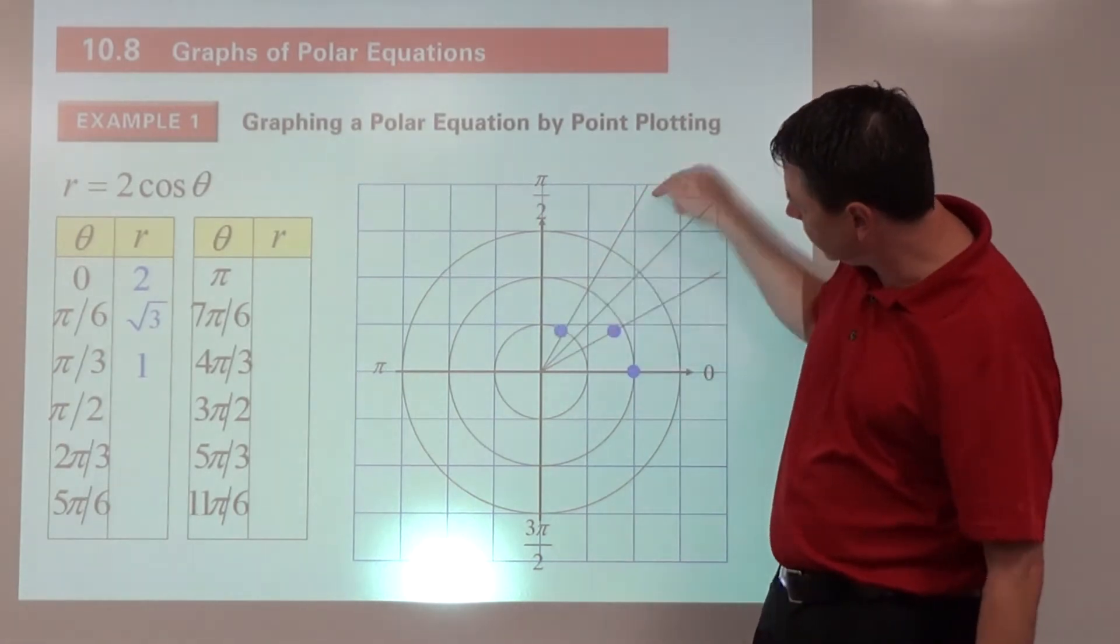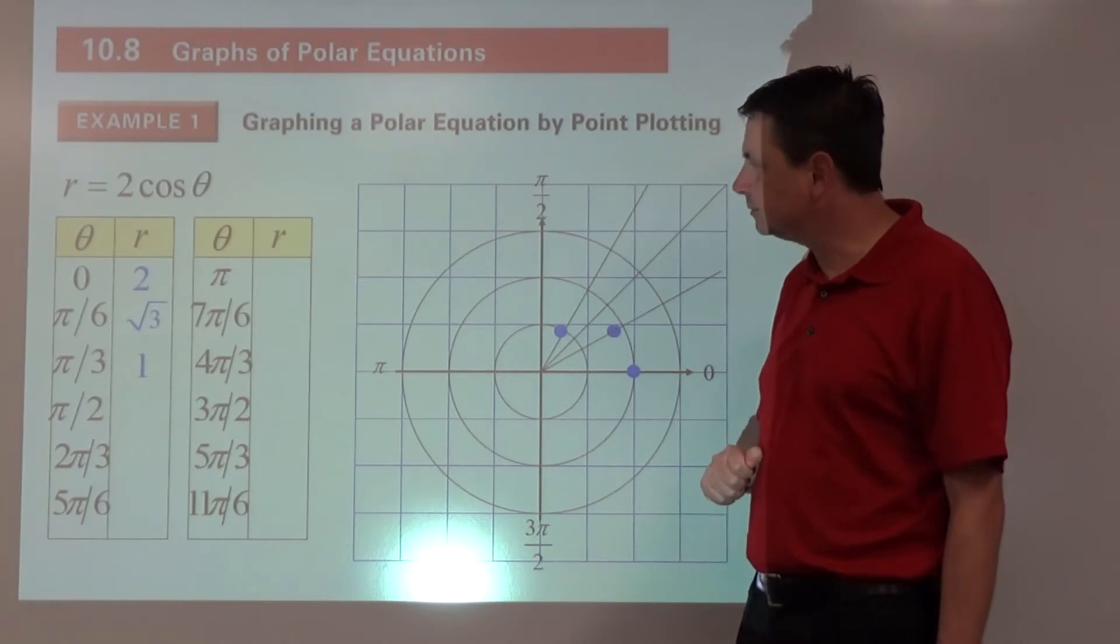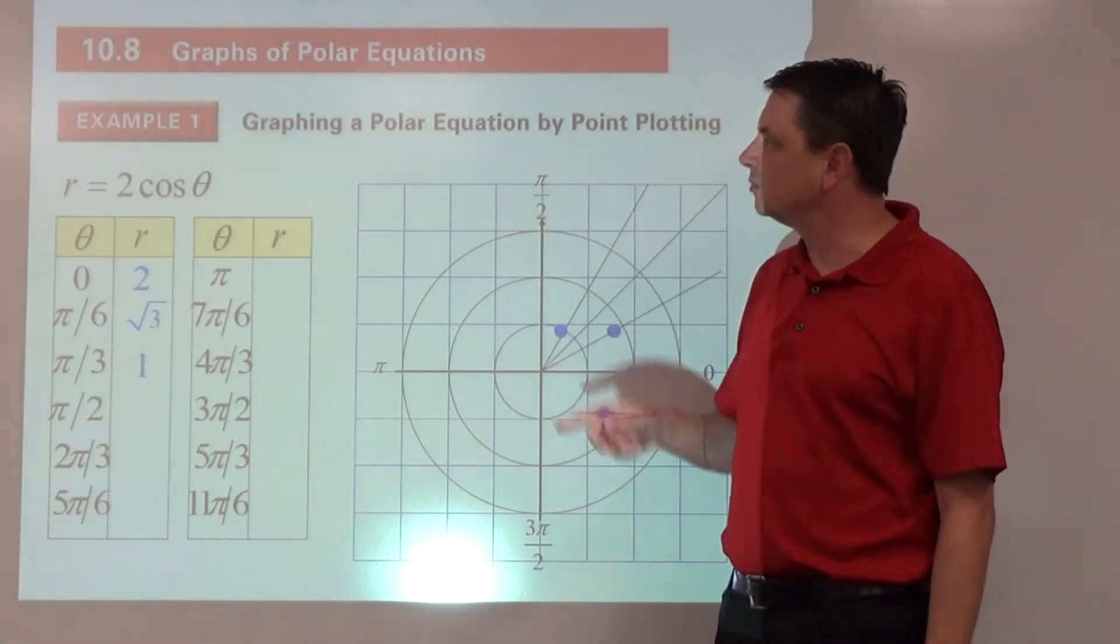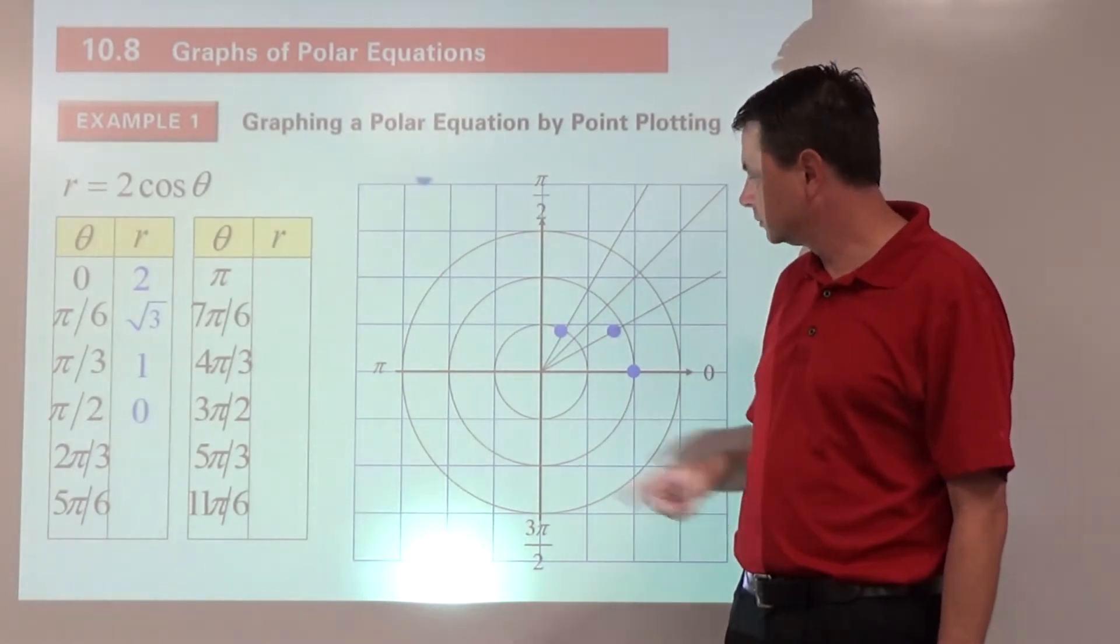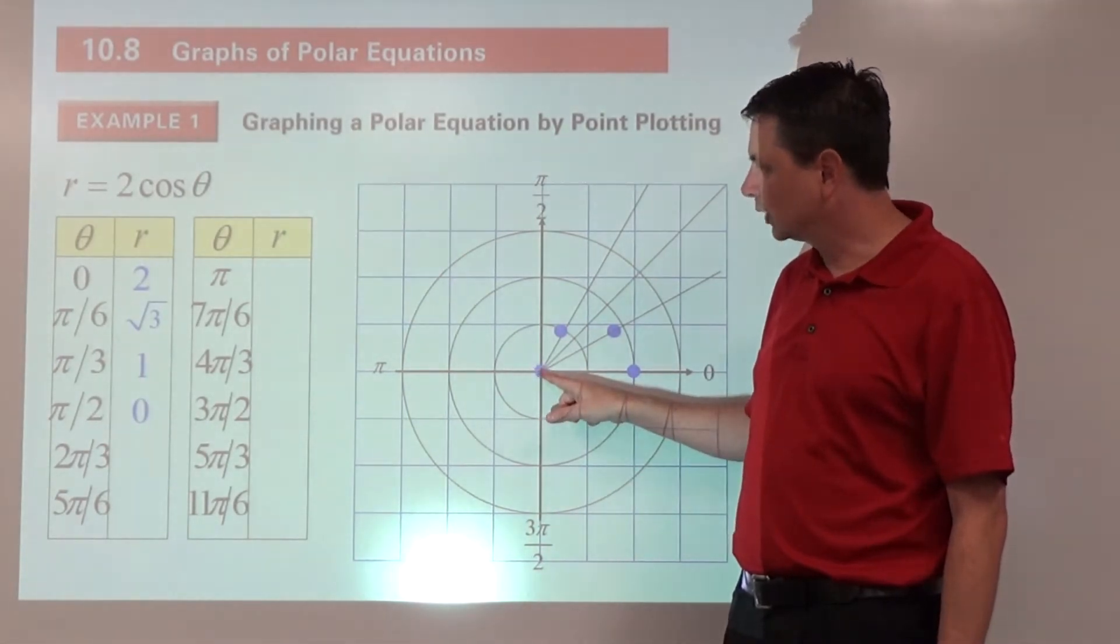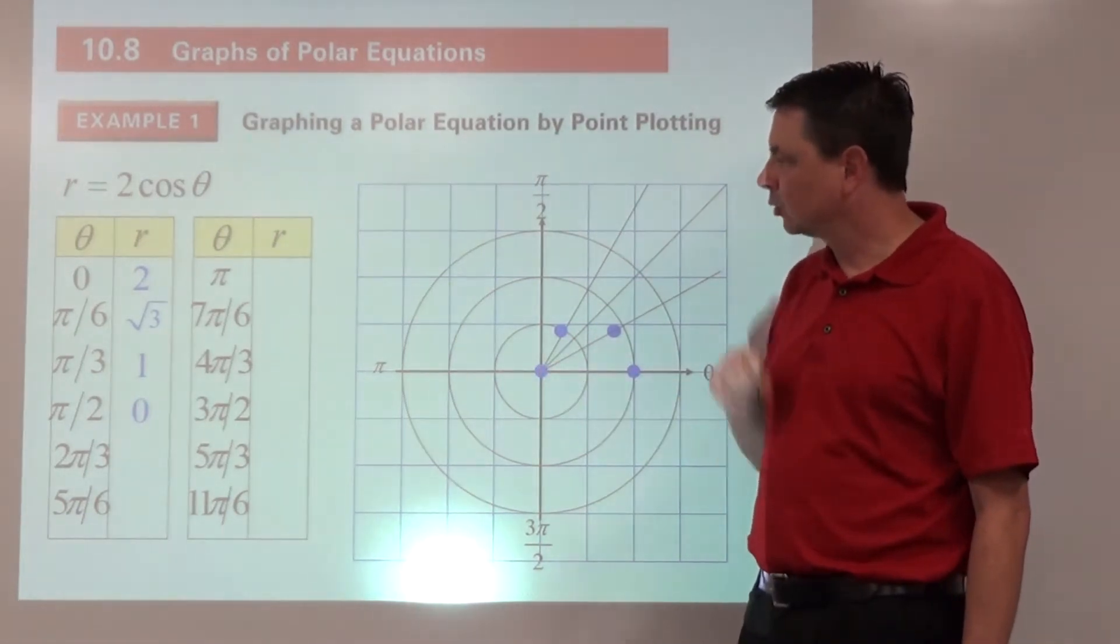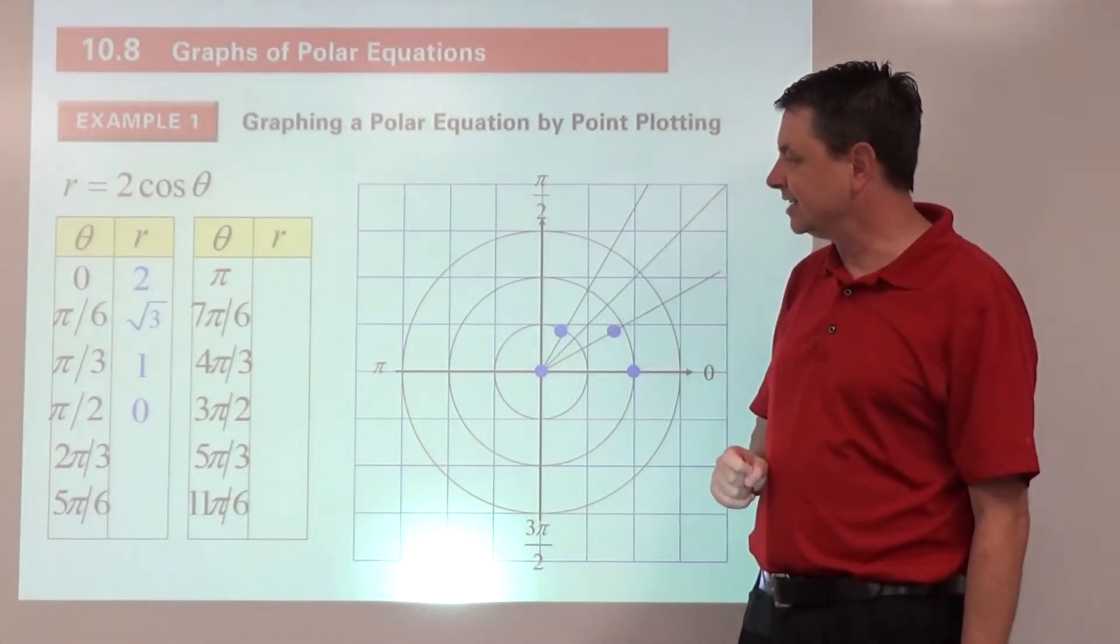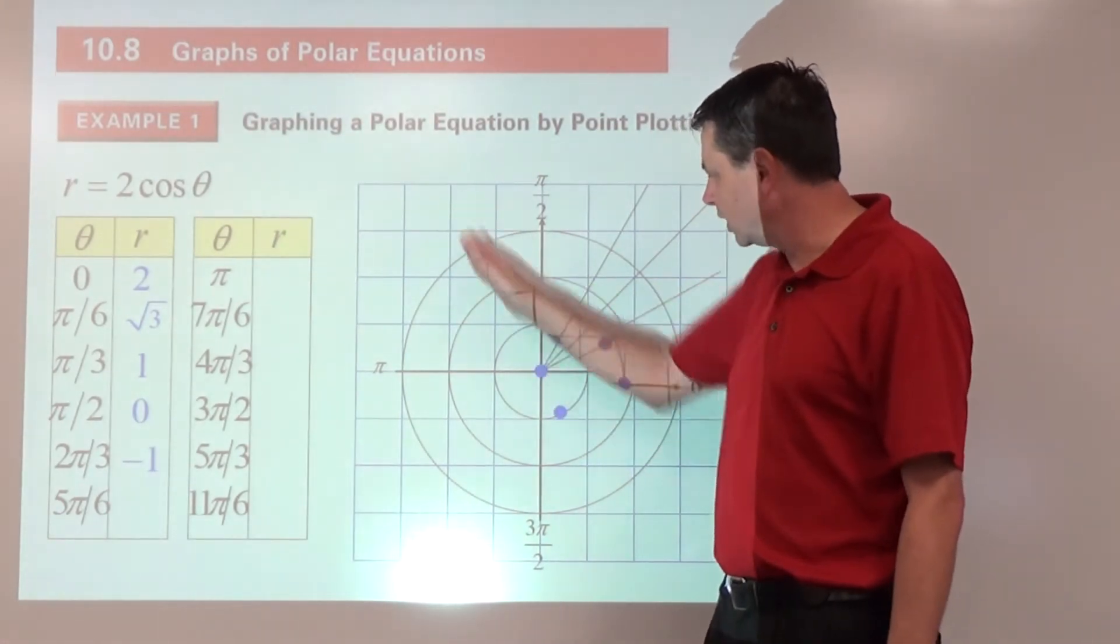Pi over 3, cosine of pi over 3 is a half times 2 is 1. Here's pi over 3, go one unit in that direction. Pi over 2, cosine of pi over 2 is 0 times 2 is 0. Anytime r is 0, we're talking about the origin. Let's continue. 2 pi over 3, cosine of 2 pi over 3 is negative a half times 2 is negative 1.